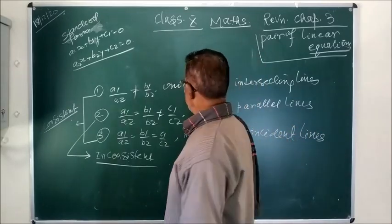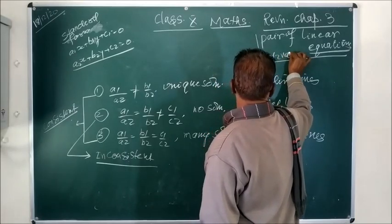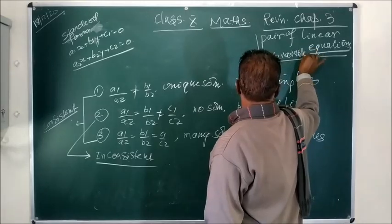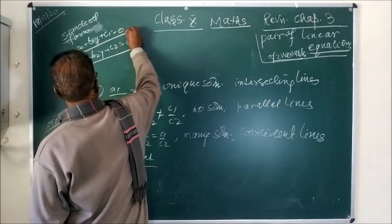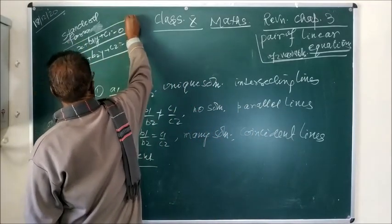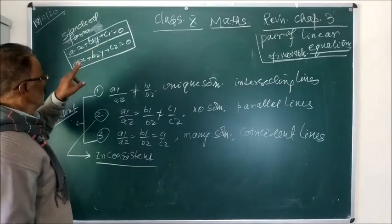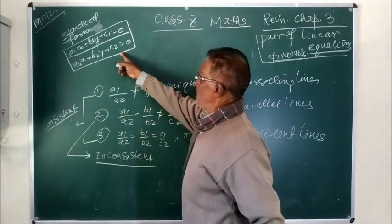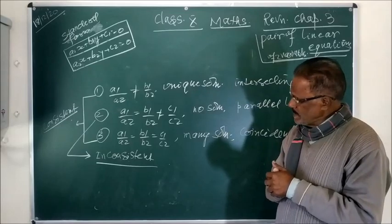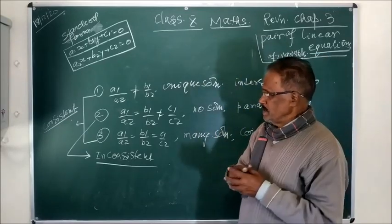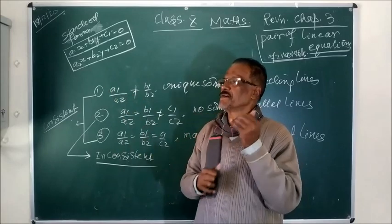Pair of linear equations of two variables. So many equations you must have solved and seen. These are the standard form of two equations: A1x + B1y + C1 = 0, and A2x + B2y + C2 = 0. Here A1, B1, C1 are real numbers. A1 is the coefficient of x — the subscript 1 indicates equation 1, and 2 represents equation 2.